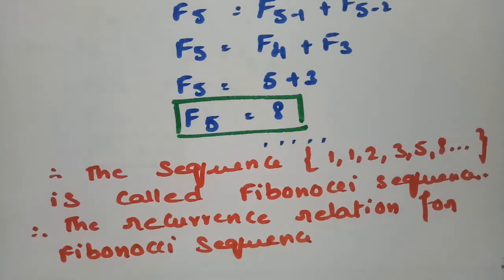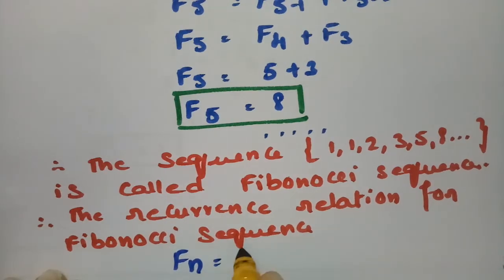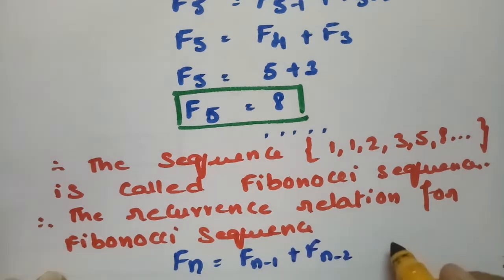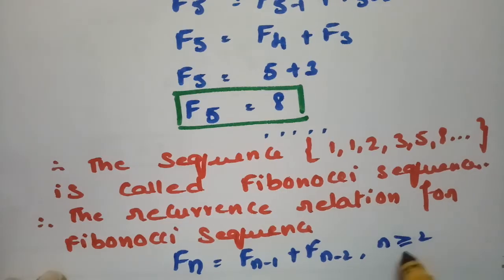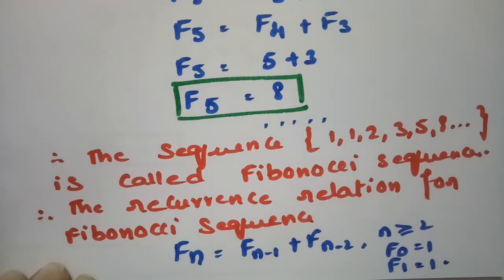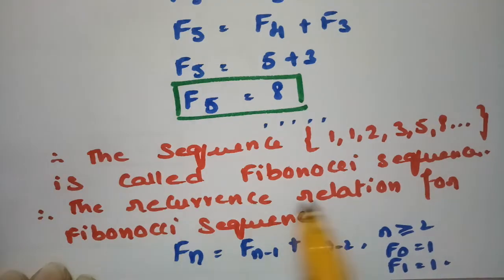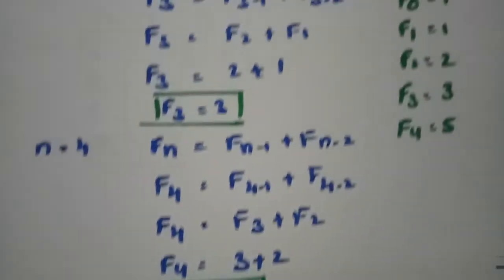The recurrence relation for the Fibonacci sequence is Fₙ = Fₙ₋₁ + Fₙ₋₂, with initial conditions n ≥ 2, F0 = 1, and F1 = 1. This is the sequence of the Fibonacci sequence and this is its recurrence relation.